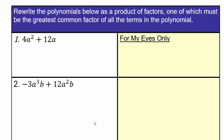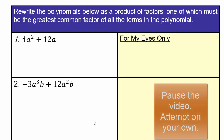In the next few videos we'll review factoring. Let's start out with writing these polynomials as a product of the greatest common factor times another factor, so that when you multiply it out it gives you the answer: 4a squared plus 12a, negative 3a cubed b plus 12a squared b.